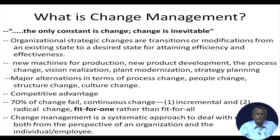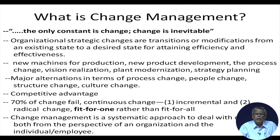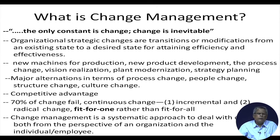Evidence shows that seventy percent of changes throughout the globe fail. But people are still continuously eager for making change because without change, society, individuals, and organizations will be static. These changes are of two types: one is incremental change, and the other is radical change or transformational change.